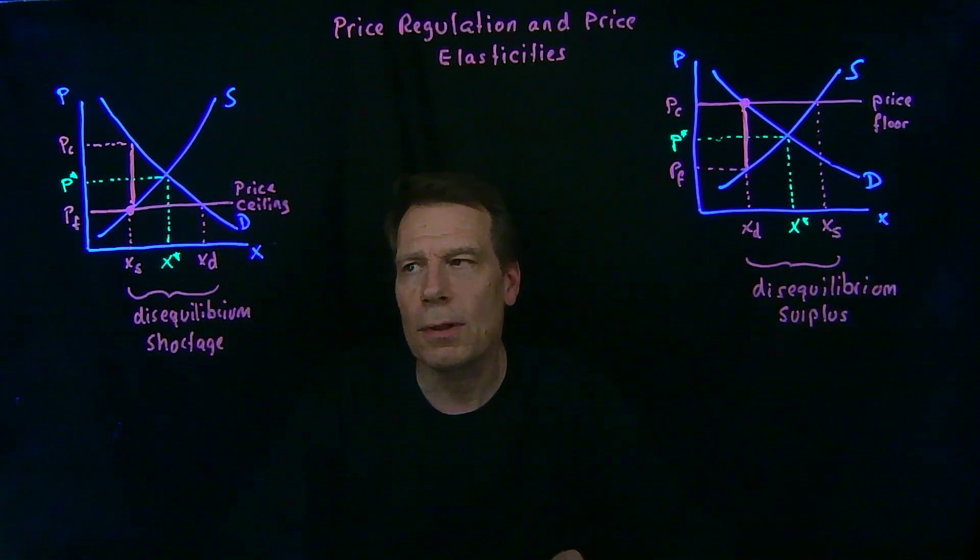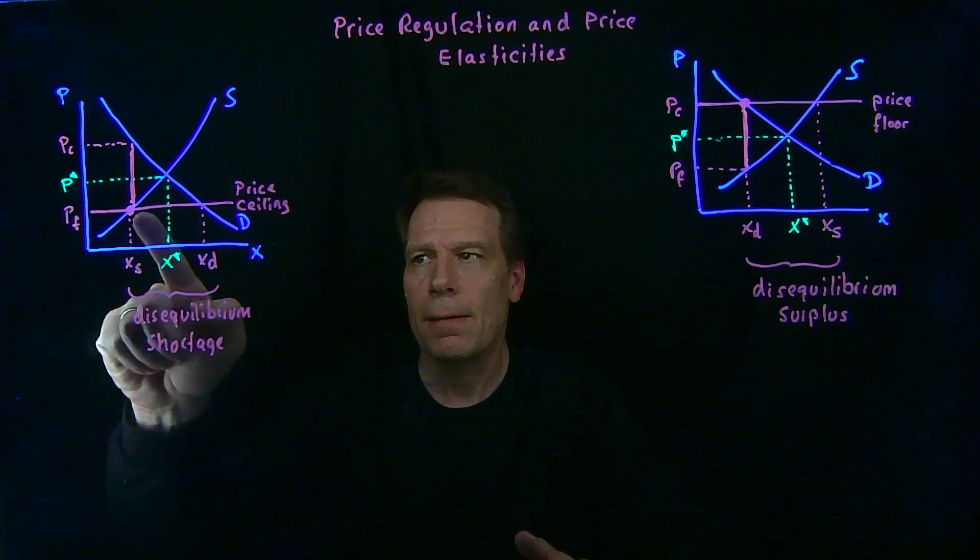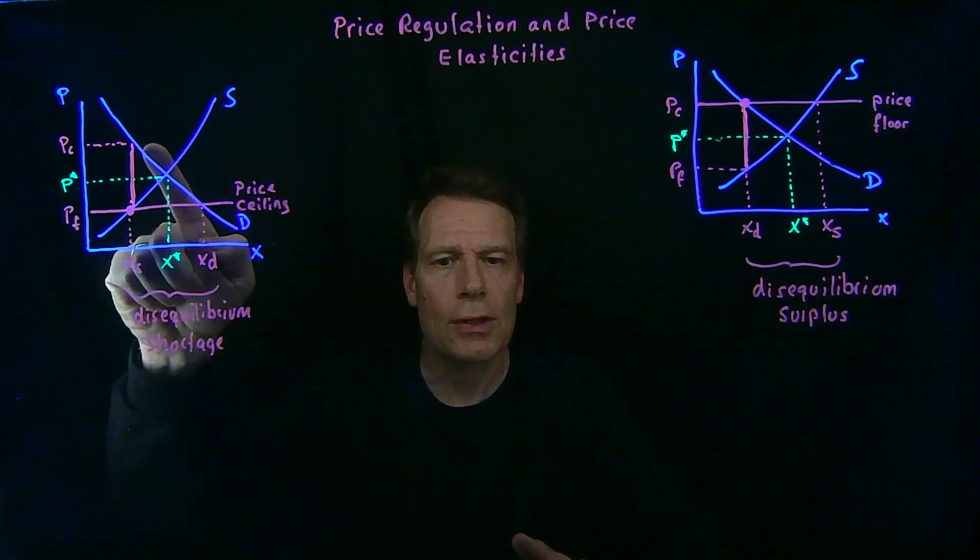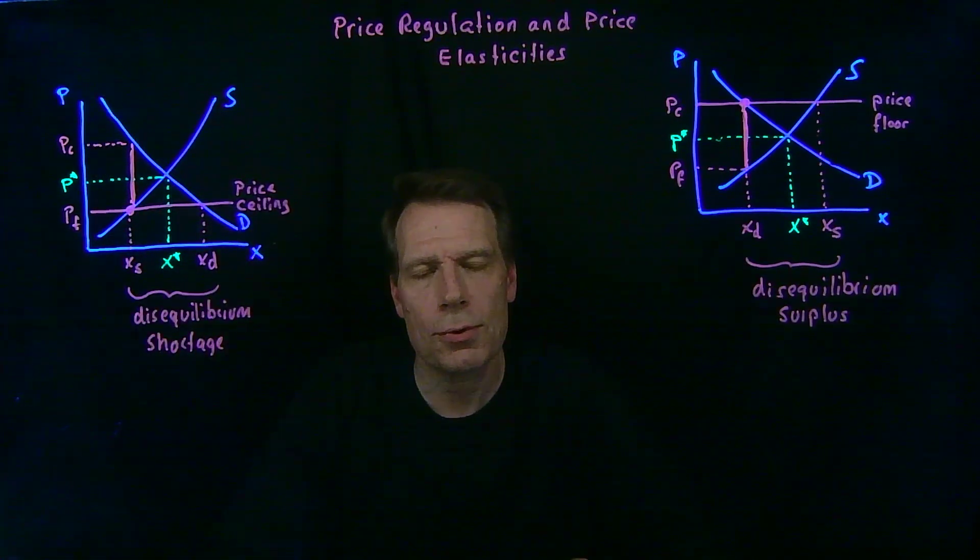At that new equilibrium, firms get the price ceiling as their price, but consumers end up paying more than the price ceiling once we include that additional effort cost that it took to get to those goods.